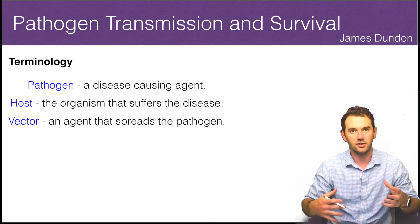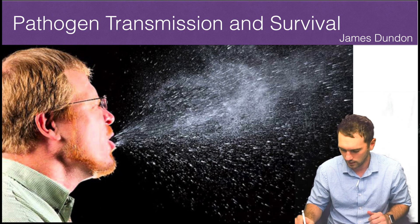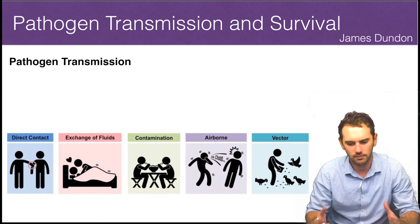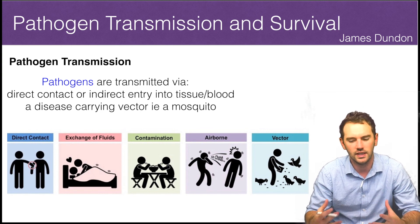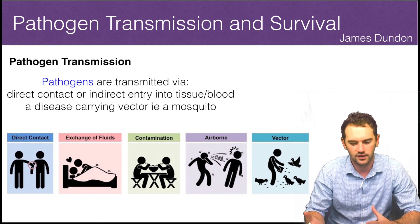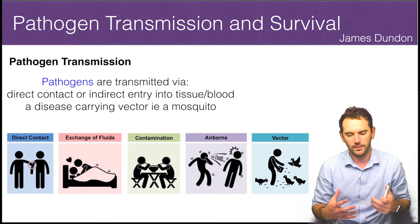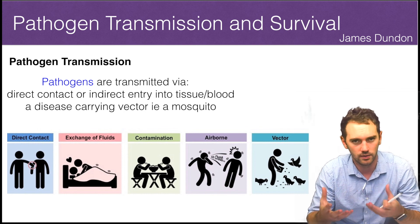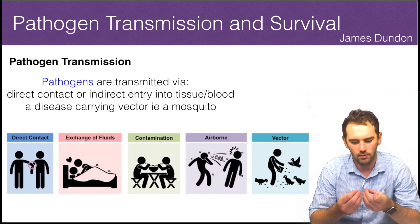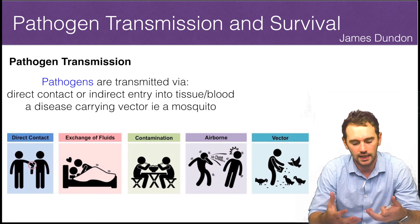So how are these pathogens actually transmitted? When we look at pathogen transmission, we can summarize it as direct contact or indirect entry into tissue or blood, or a disease-carrying vector that penetrates our skin. Direct contact — for example, if I sneeze and I'm sick, those droplets of liquid with the pathogen inside are now on my skin, and if I touch somebody else, they could potentially have that enter their body and get sick also.